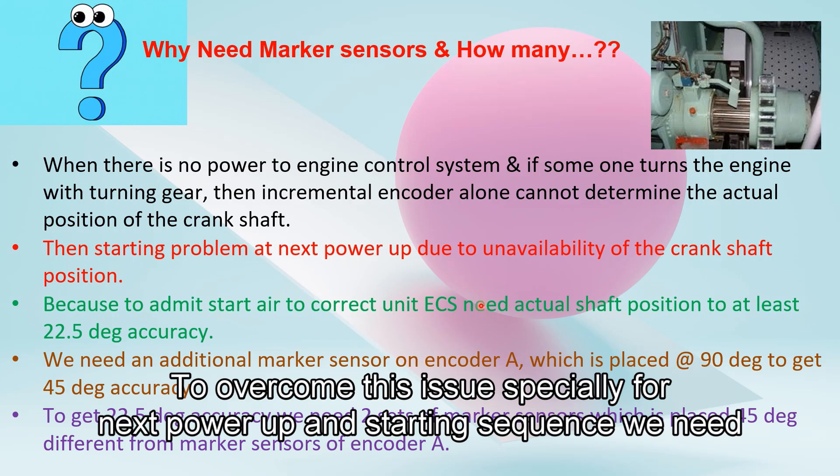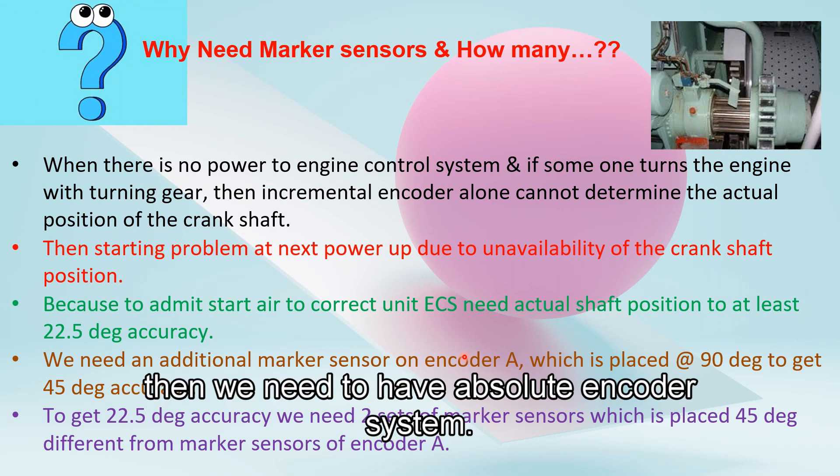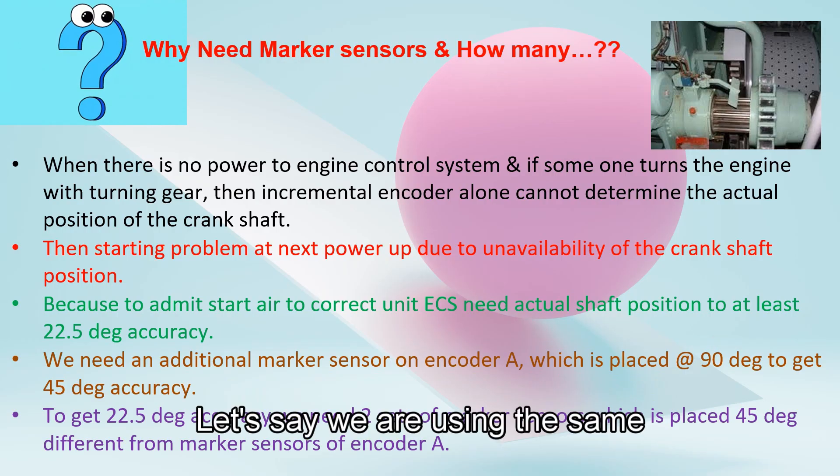To overcome this issue, especially for the next power-up and starting sequence, we need an accuracy of angle up to 22.5 degrees to admit the starting air. So to get the engine position accuracy to 22.5 degrees, we need to have an absolute encoder system.